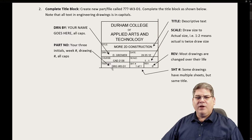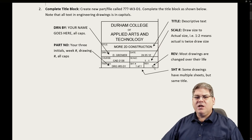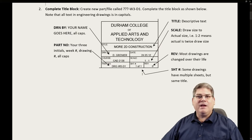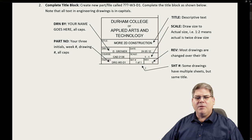For the part number, I would like the file name — so in this case, SLC-W3-D1 would be fantastic. We're going to talk a lot about revisioning today. For scale, if it's one-to-one that's great; if scale doesn't matter, you can always put NTS — not to scale. The date is always appreciated, and it helps with your revisioning. If you're on revision one but keep updating, keep that date up to date.